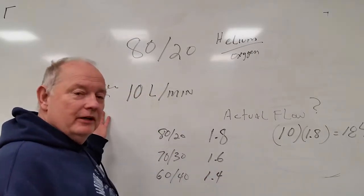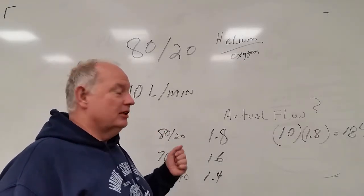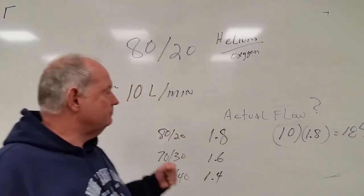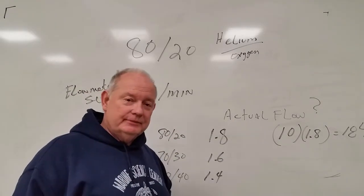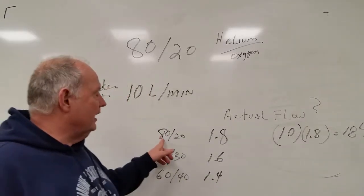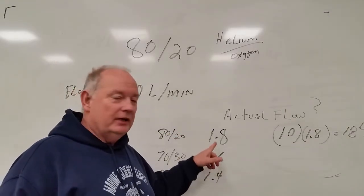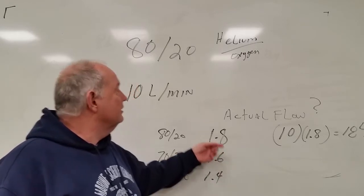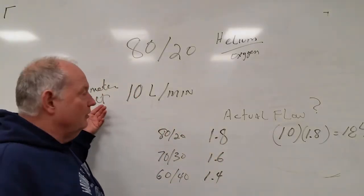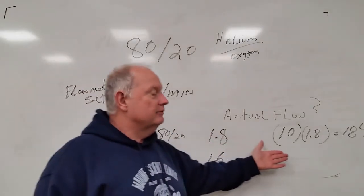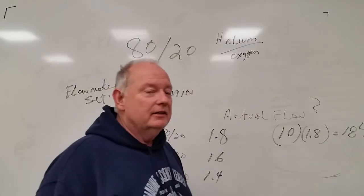Your flow meter is set at 10 liters per minute and it is a normal flow meter. How would you know what your actual flow is? There's a ratio for 80-20. The flow factor is 1.8, so 1.8 times the 10 liters on an oxygen flow meter gives you a total flow rate of 18 liters per minute.